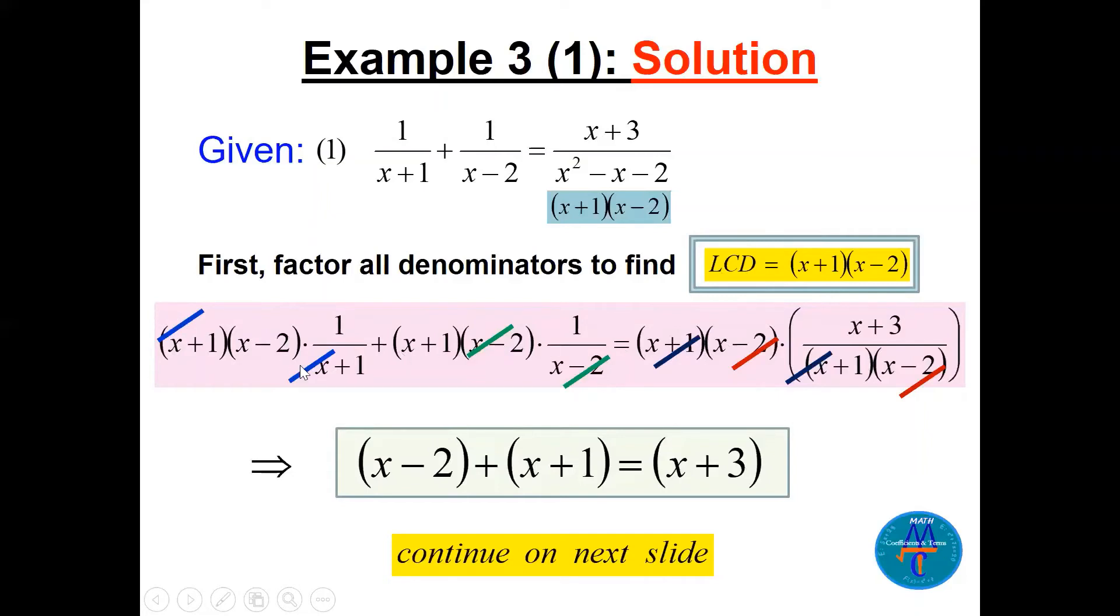As we did in example 2 in the 12. So here we multiply with this LCD, this is the LCD, this is the LCD. Now you start to cancel. x plus 1 canceled, we're left with x minus 2. x minus 2 is canceled, x plus 1. Cancel both here. And then x plus 3. Now this is the new equation here. x minus 2 plus x minus 1 plus x plus 1 is equal to x plus 3. Just simplify the equation, find x. But remember, before we continue, since we have a variable here in the denominator, we have to check. We have to make sure that there is no zero in the denominator. So this is why we check, we have to have no zero in the denominator.